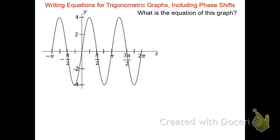Looking at the graph, it appears to be a sine function. It's starting at center on the origin, and then rising to the maximum, center, min, and then finally back at pi where it's at center. Looking at the graph, we can see that it's centered between negative 4 and 4 vertically, which means there is no vertical shift, and the amplitude is 4.